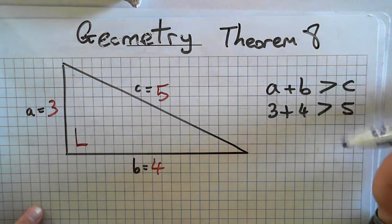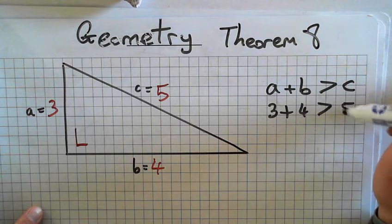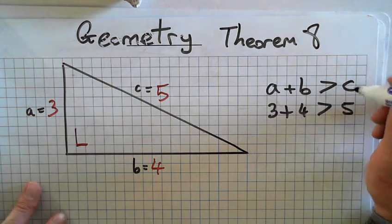So three and four is greater than five. So that's true, isn't it? Try another one.